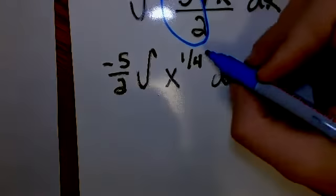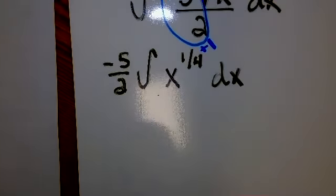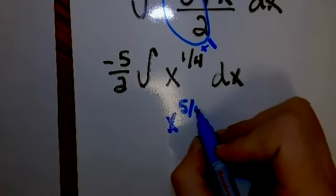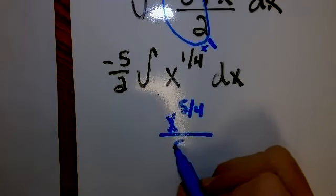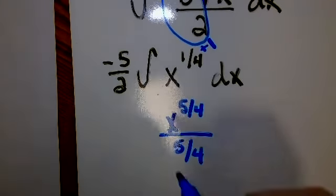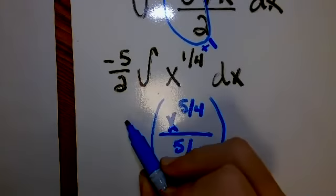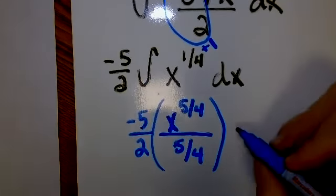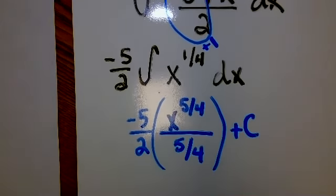So now if I use my power rule, I add 1. Well, one-fourth plus 1, so one-fourth plus four-fourths would give me five-fourths. And I divide by that new exponent. And then don't forget, you still have this negative five-halves on the outside. And of course, my constant of integration.